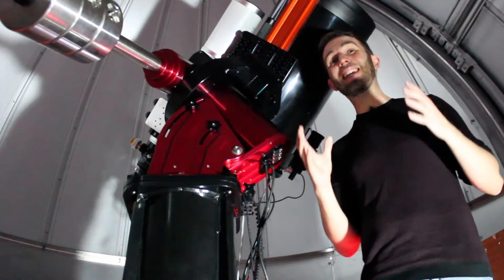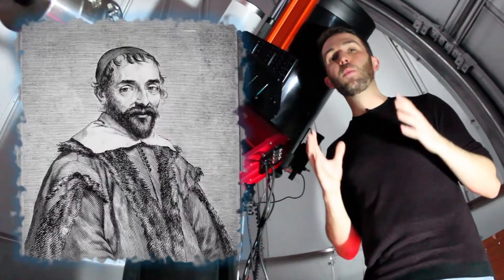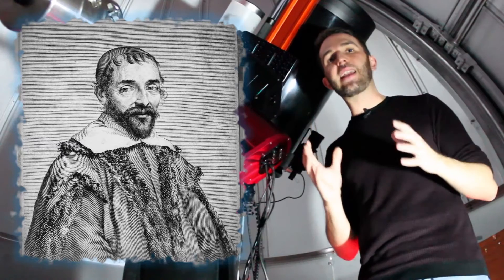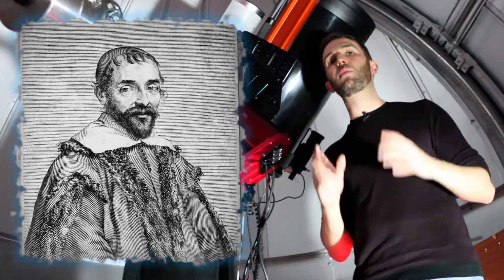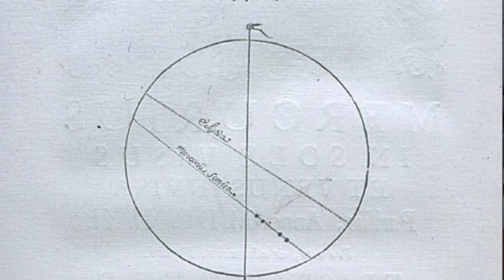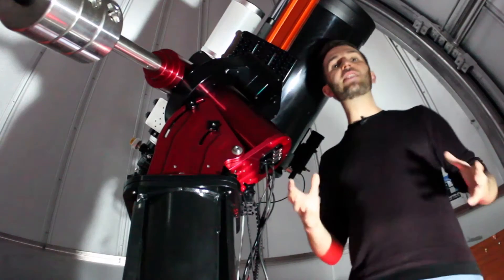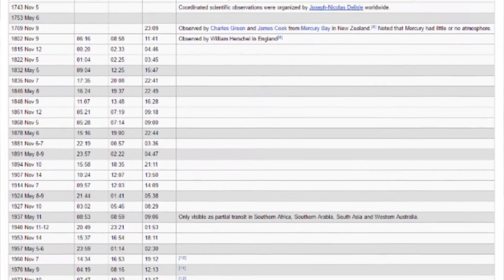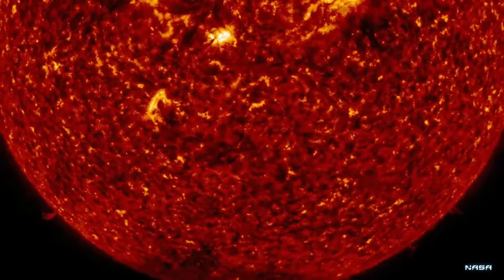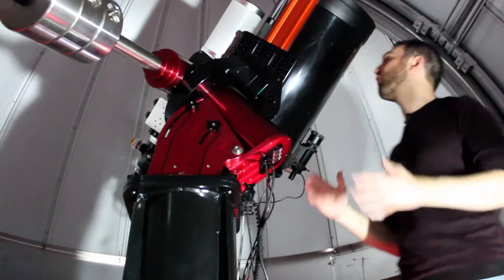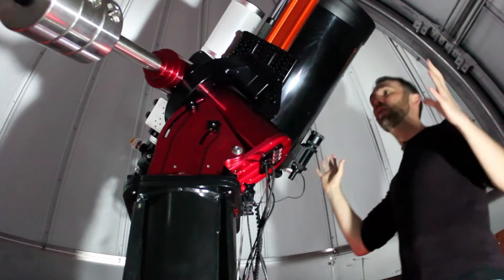It wasn't until 1631 that Pierre Gassendi first observed a planetary transit through his telescope. This was the transit of Mercury as predicted by Johannes Kepler, and using his laws we now know that Mercury transits happen 13 or 14 times a century. In fact there was one on the 9th of May 2016 and I watched it from this very observatory.